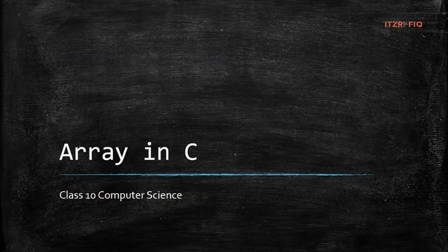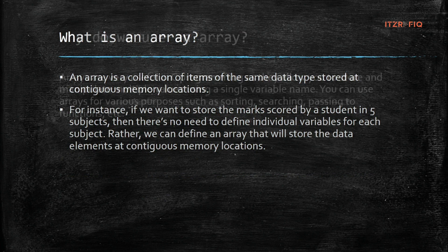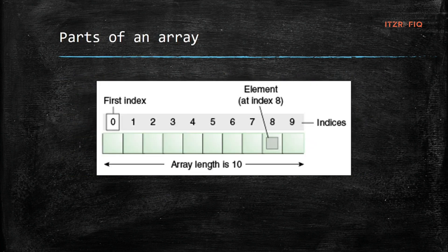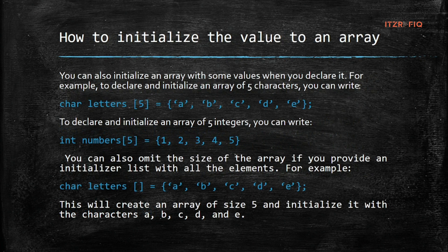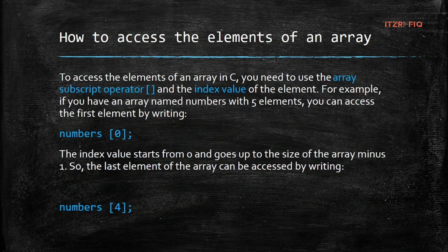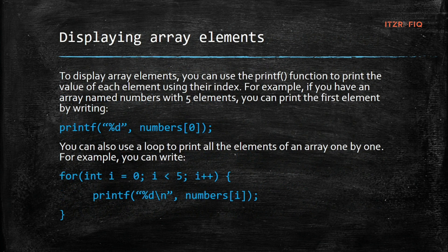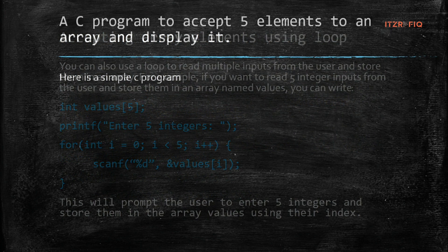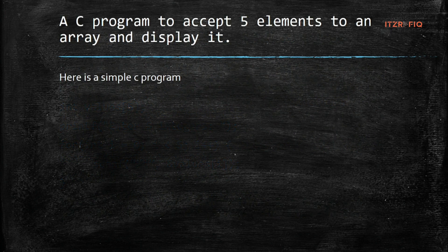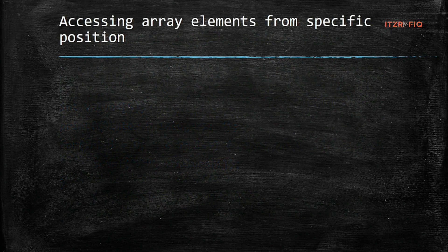Welcome. In the previous video we discussed what an array is, its parts, how to declare elements, how to initialize values, and how to write a simple program to accept input and display output for an array. Here we will discuss how to access elements from an array at a specific position.